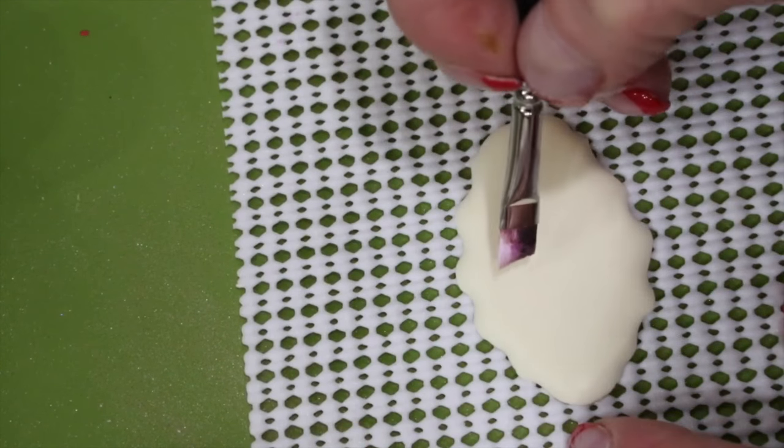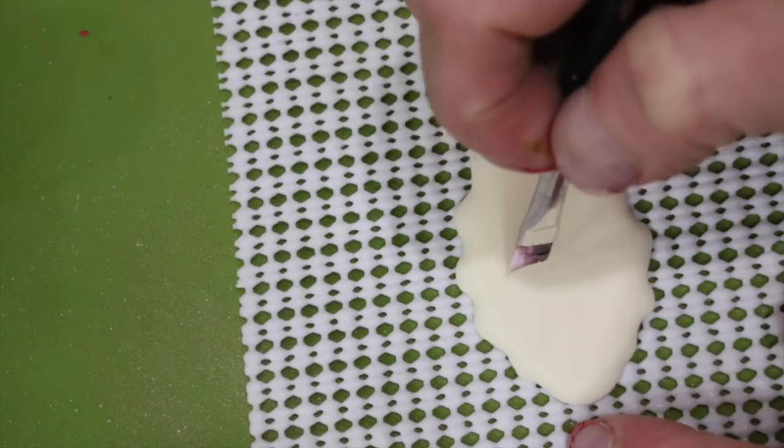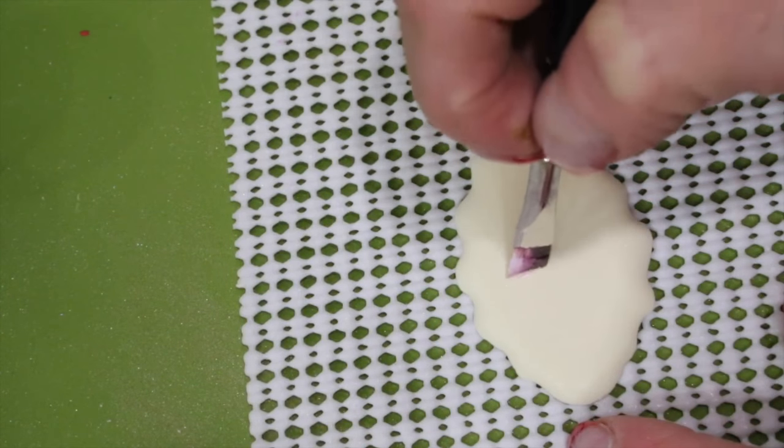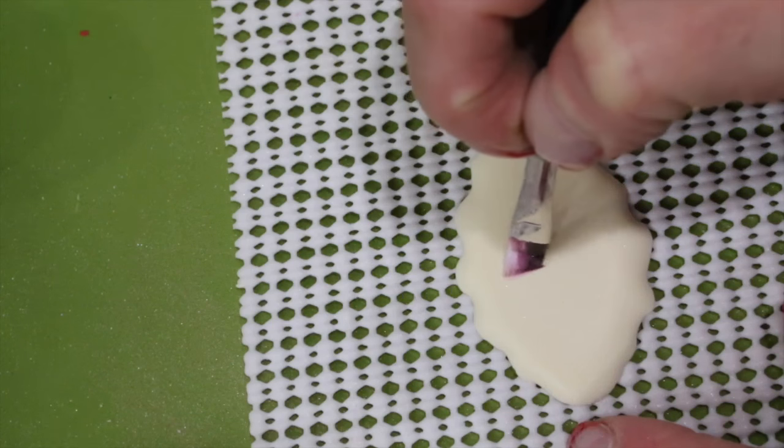Now for painting, you'll want to use a one-fourth angle shader with two colors on it. I'm using a dusty pink and white.